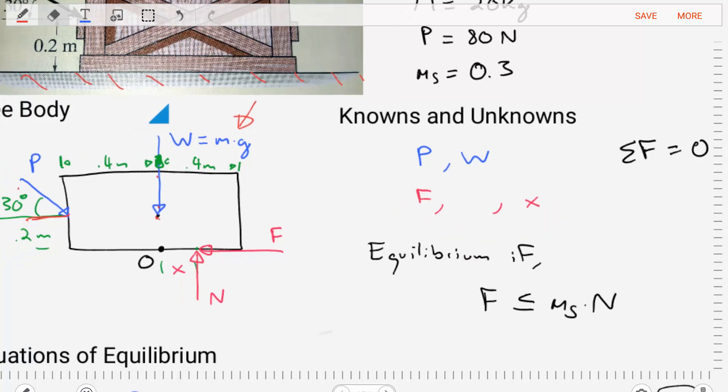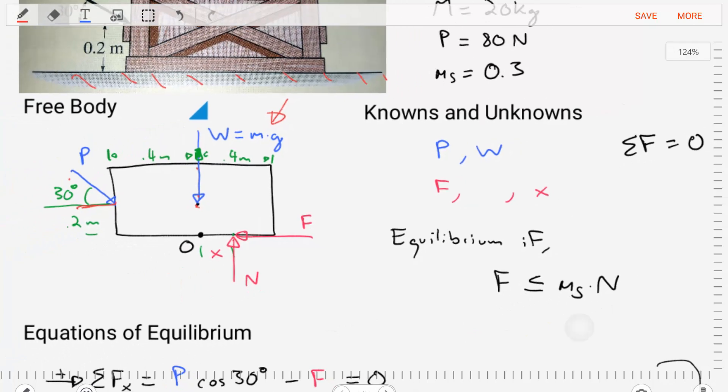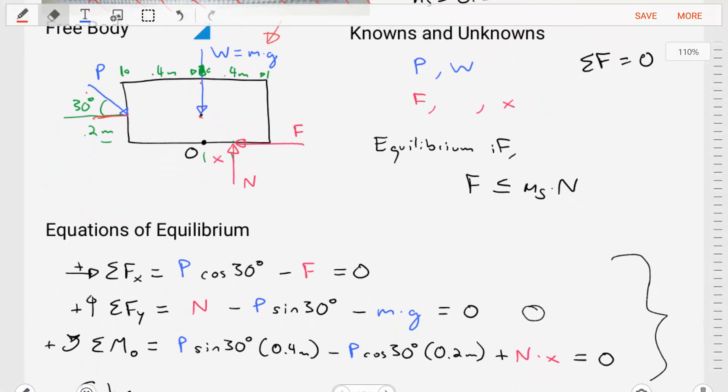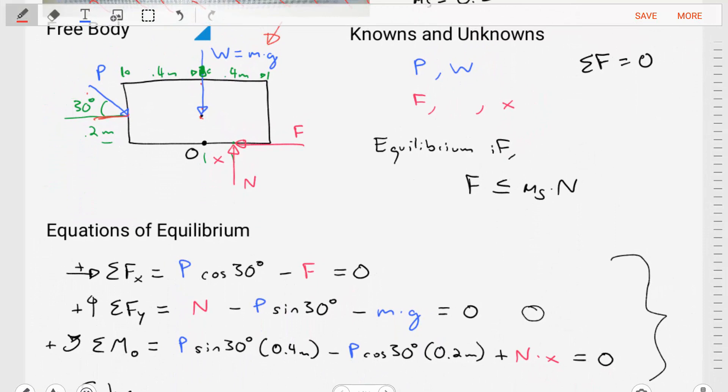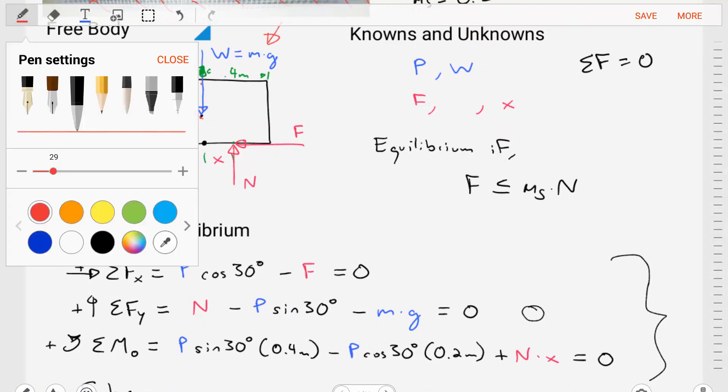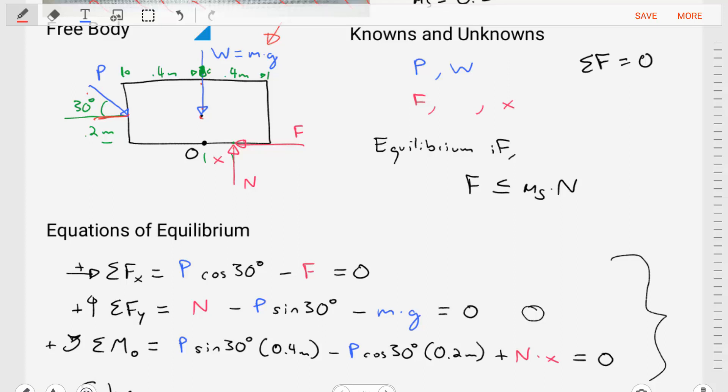So let's build our equations of equilibrium. Let's start with the sum of the forces in the x direction. This first equation here, equation one. We're going to sum the forces in the x direction. We'll take a portion of P, so the P cosine 30 degrees portion minus F and we'll set that equal to zero.